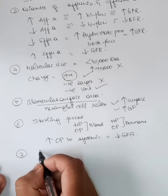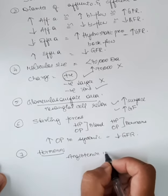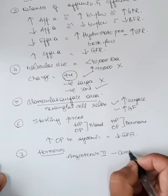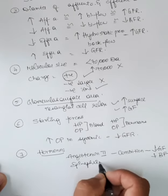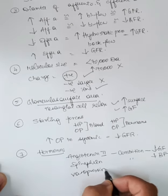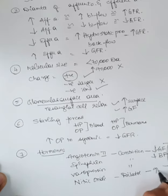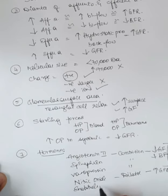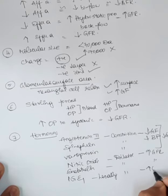Number seven is hormones. Angiotensin II is a potent vasoconstrictor — it causes vasoconstriction and decreases GFR when blood flow is reduced. Epinephrine and vasopressin are also vasoconstrictors and decrease GFR. Nitric oxide is a vasodilator and increases GFR. Endothelin is a vasodilator and increases GFR. PGE1 (prostaglandin E1) is locally produced, acts as a vasodilator, and increases GFR.